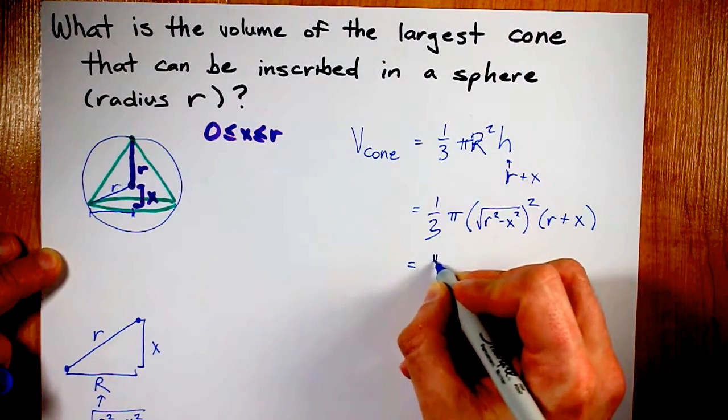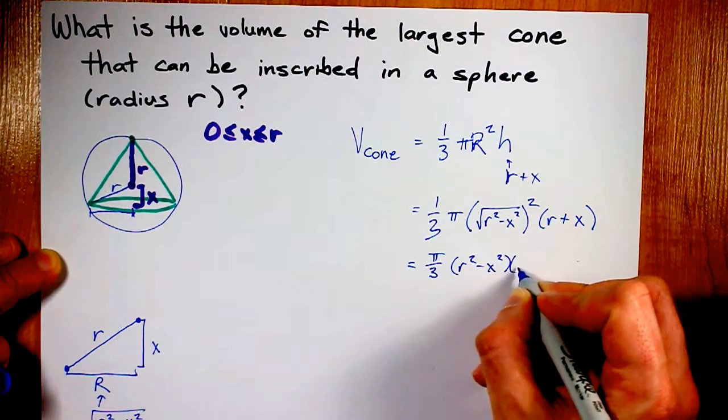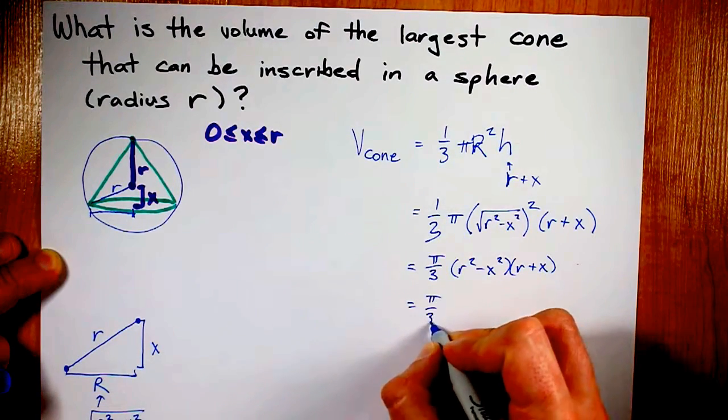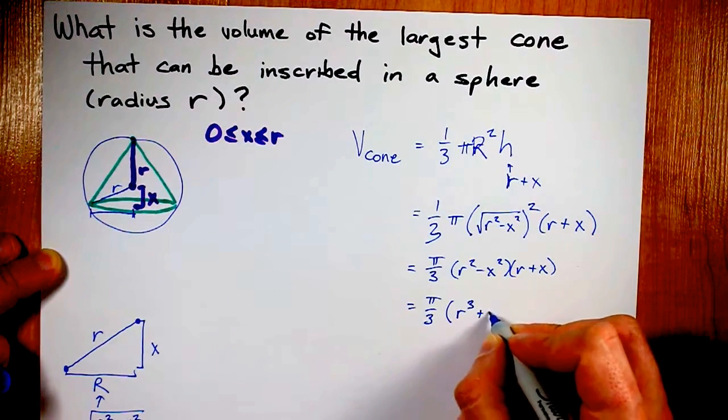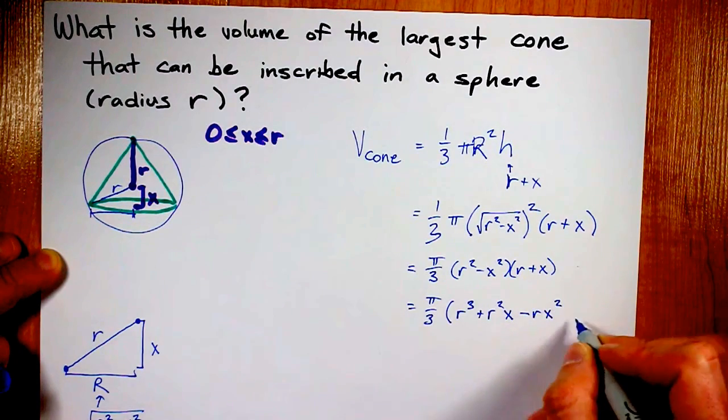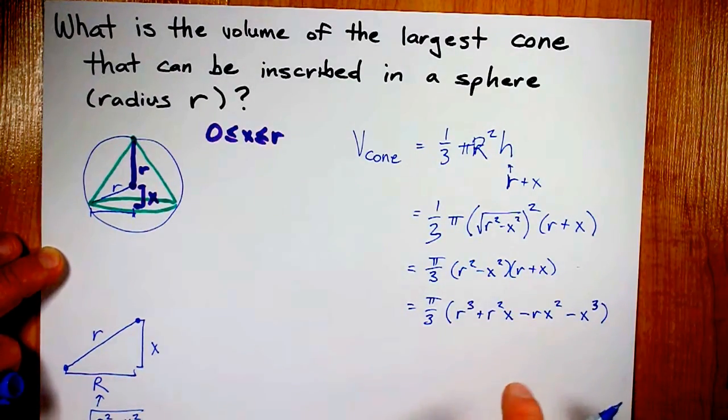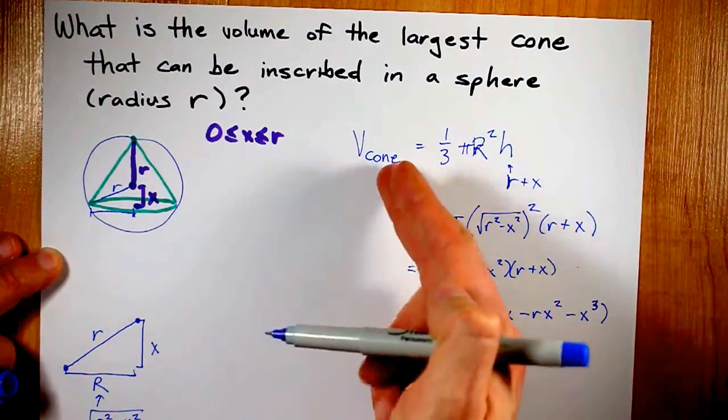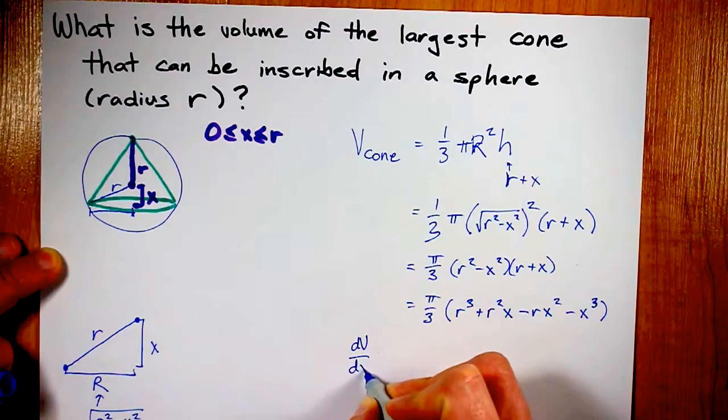So, the volume of the cone is one-third pi the square root of r squared minus x squared all squared. Oh, that's convenient. I'm going to like that. R plus x. Yes. Let's simplify this. I got pi over 3 times r squared minus x squared times r plus x. I'm actually going to expand that a little further. I have r cubed plus r squared x minus rx squared minus x cubed. Now, that's important because I'm trying to take the derivative, or rather, how I'm going to optimize for the maximum volume of the cone, is to take dv by dx.